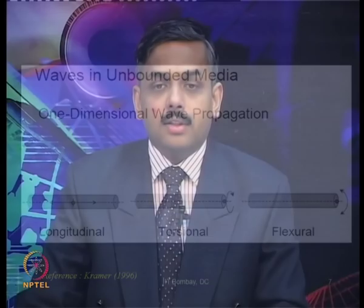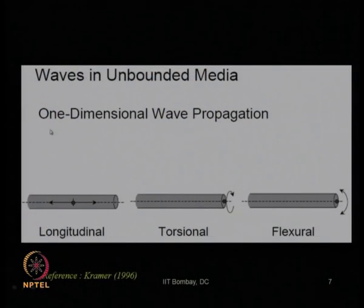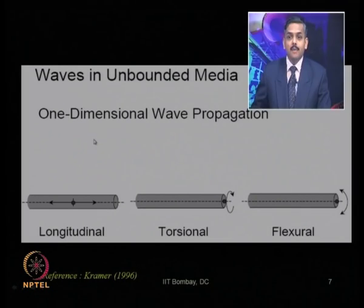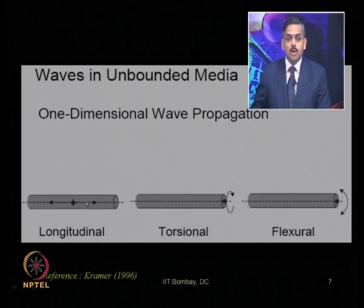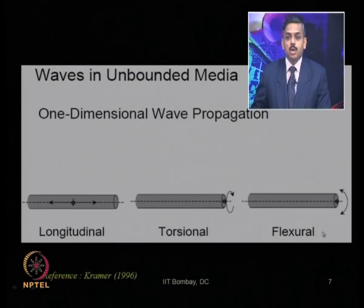We started with the simplest case in the previous lecture — waves in unbounded or infinite media. We considered one-dimensional wave propagation, where the wave propagates only in one dimension, say the x direction. Based on different types of wave propagation, we have three major sub-classifications: longitudinal wave, torsional wave, and flexural wave, depending on the movement of particles relative to the movement of the wave. When the wave propagates in the x direction and particles also move in the same direction, we call it longitudinal wave propagation. When particles move perpendicular to the x direction, we call it torsional; and when they move in yet another direction, we call it flexural wave propagation.